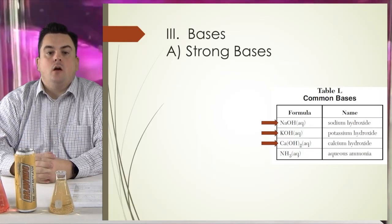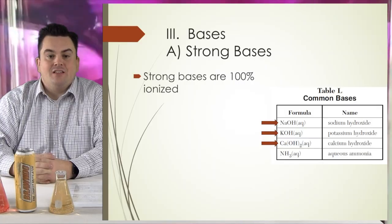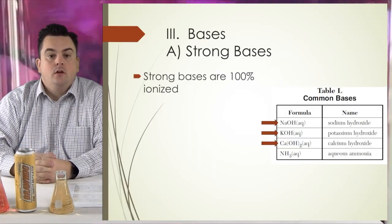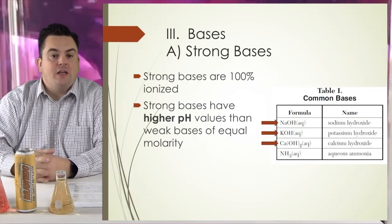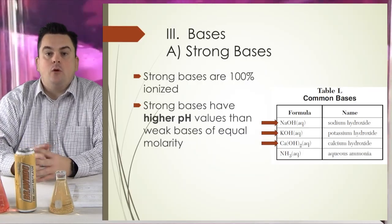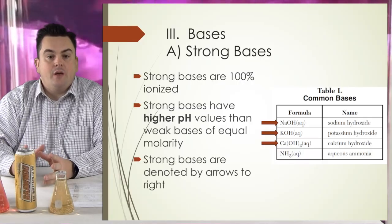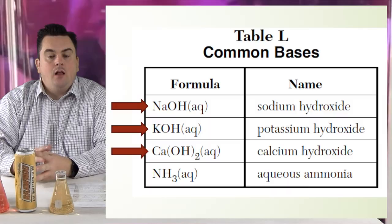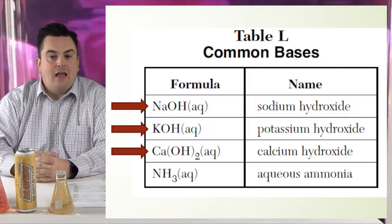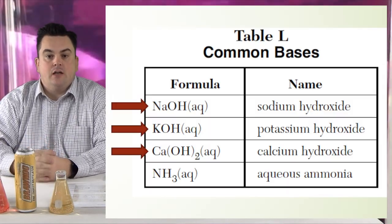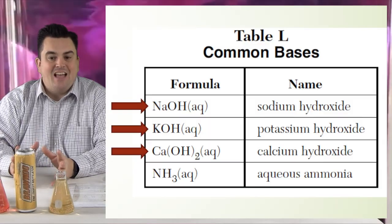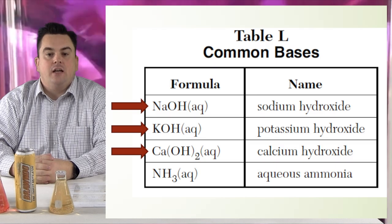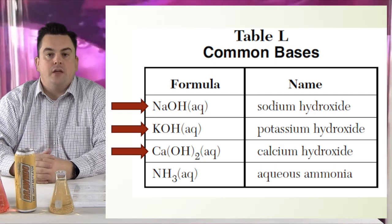Bases — let's start with strong bases. Strong bases are 100% ionized, just like strong acids, and have higher pH values than weak bases of equal molarity. Strong bases are denoted by arrows to the right. Looking at Table L, the top three are NaOH aqueous (sodium hydroxide), KOH (potassium hydroxide), and Ca(OH)2 (calcium hydroxide) — all considered strong bases.